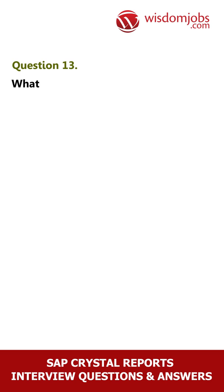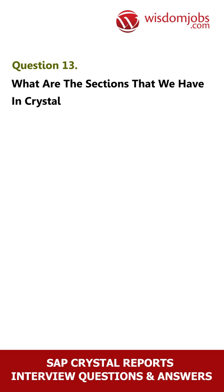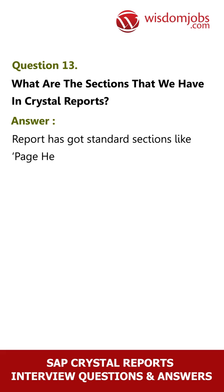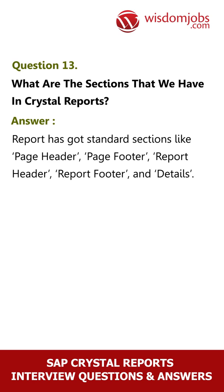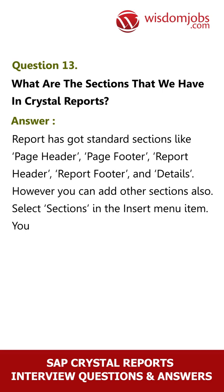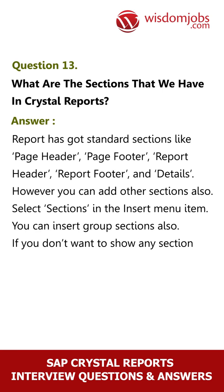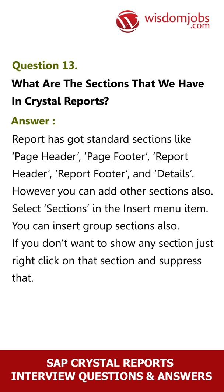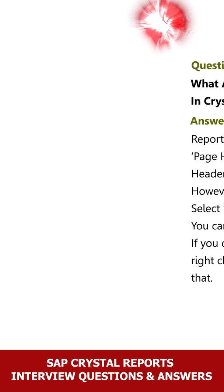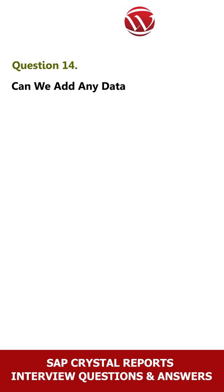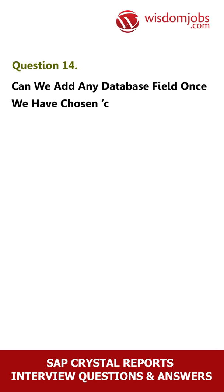Question 13: What are the sections that we have in Crystal Reports? Answer: A report has standard sections like Page Header, Page Footer, Report Header, Report Footer, and Details. However, you can add other sections also — select Sections in the Insert menu item. You can insert group sections also. If you don't want to show any section, just right-click on that section and suppress it.